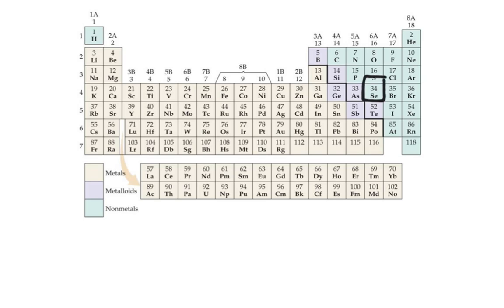In order to write the noble gas configuration, you're going to start on your element, you're going to go up and all the way to the right. The element that you land all the way on the right on is going to be your noble gas. We're going to write that noble gas in brackets, argon.